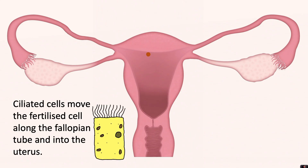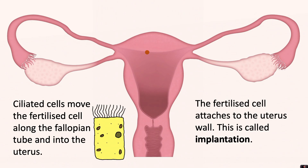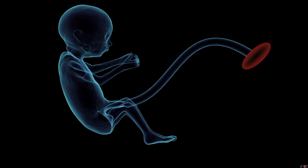Ciliated cells move the fertilised cell along the fallopian tube and into the uterus. The fertilised cell attaches to the uterus wall. This is called implantation. That single fertilised cell divides again and again to produce a baby.